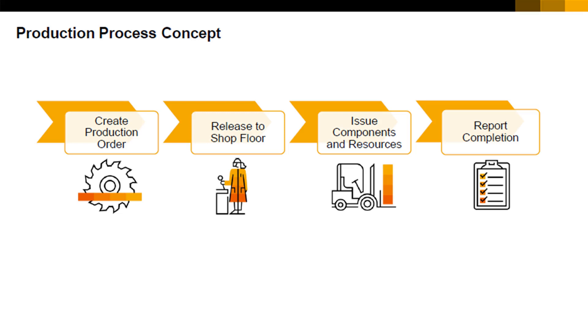Before work begins, the production order status must be changed from planned to released. At this point, the production order can begin collecting the costs of production.